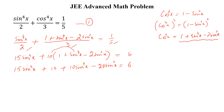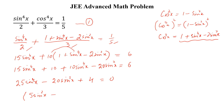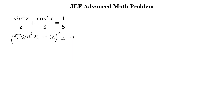Now, combining like terms — 15 plus 10 gives 25 sine to the power 4x minus 20 sine square x plus 10 minus 6, which equals 0. We can write this as 5 sine square x minus 2, whole square, is equal to 0.